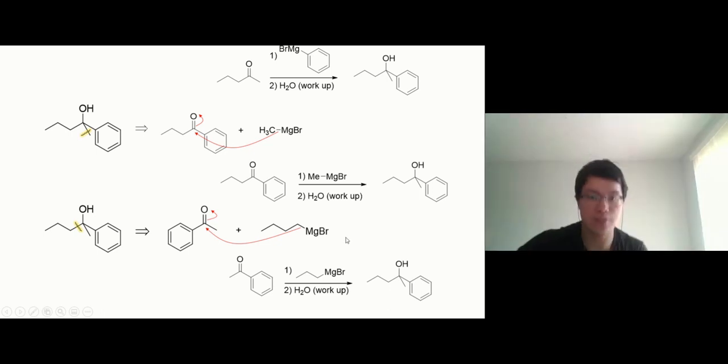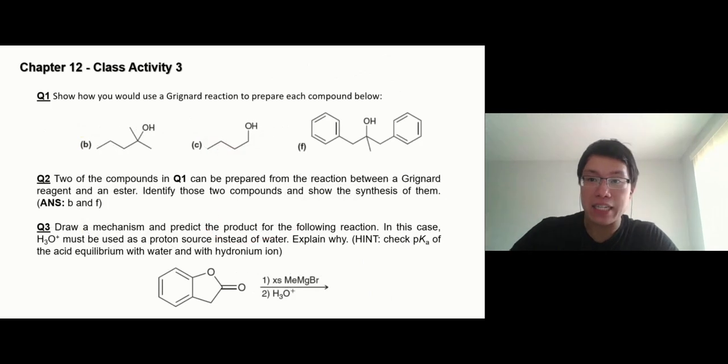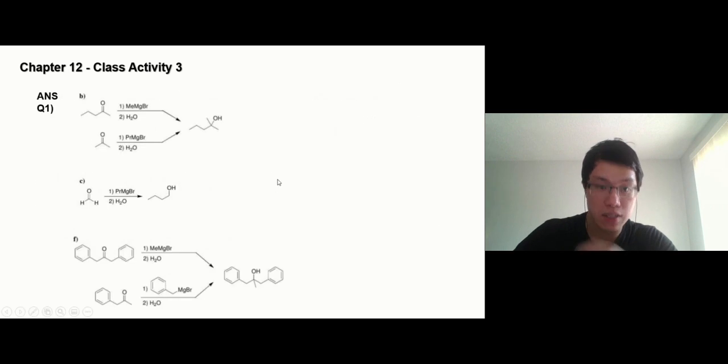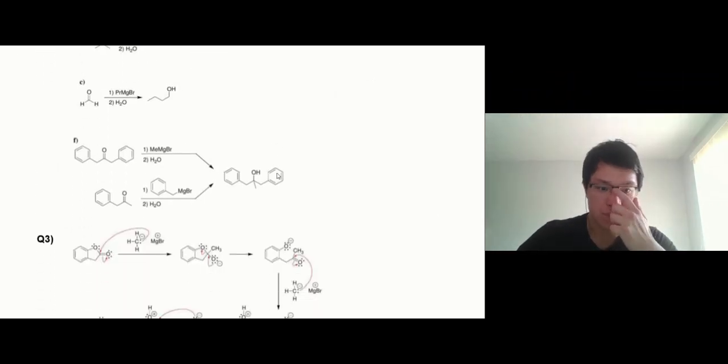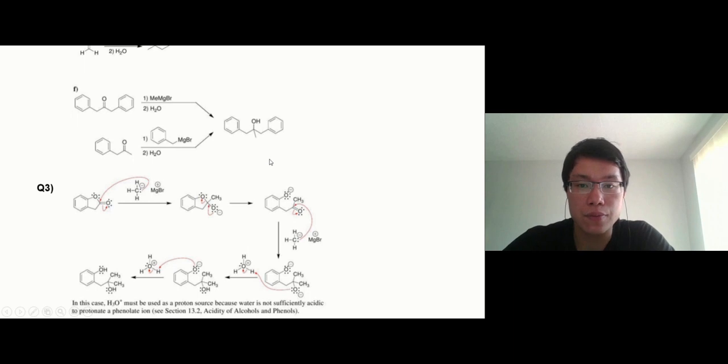That's the synthesis. So there are multiple ways to make one compound. Depends on how you look at it. Alright. Class activity number three. You have to be familiar with the mechanism and how to synthesize, how to use Grignard reagent. So questions one, two, and three. And what else we got? That's the answer.